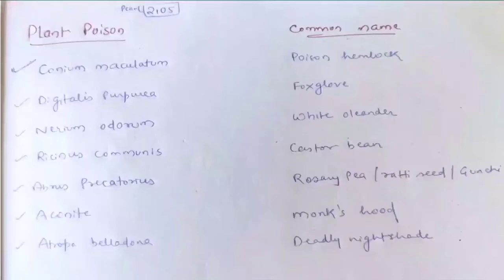Hello everyone, this is a video to help you remember plant poisons and their common names, which are frequently asked in exams. This is in reference with the Marrow Pearl number 2105, so once you watch this video, go back to the pearl and you can easily recall each one of them.